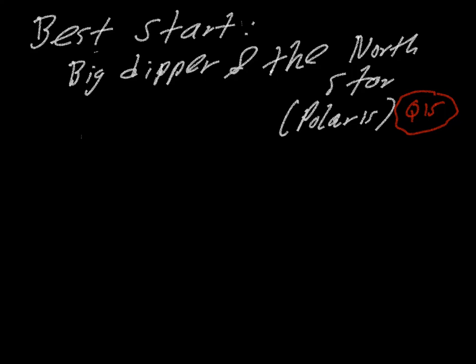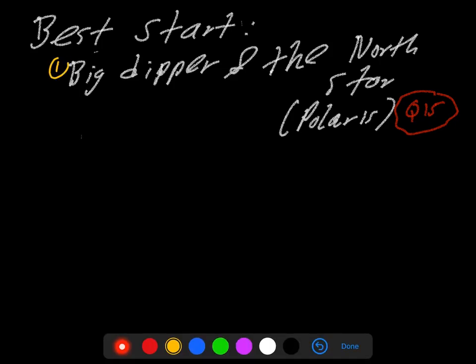In the last video we ended with a plan about how we wanted to start getting ourselves familiar with the night sky. And we discussed that going via the Big Dipper and the North Star are probably a good way to start, because they're sort of linked to each other in the sky.